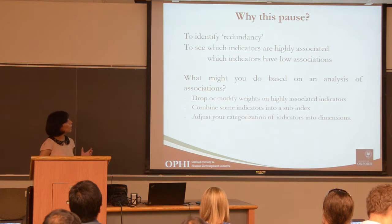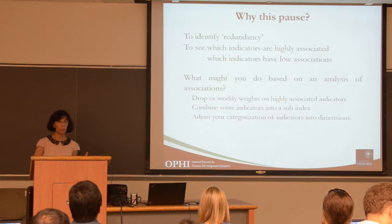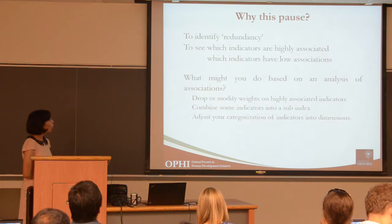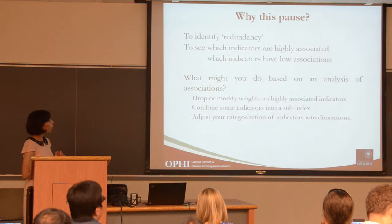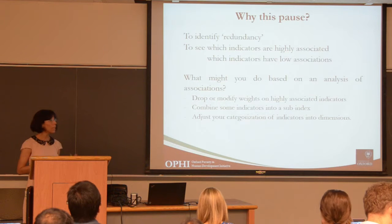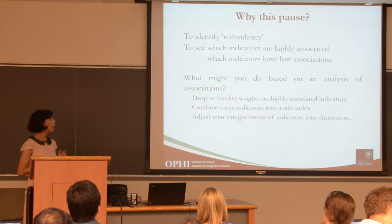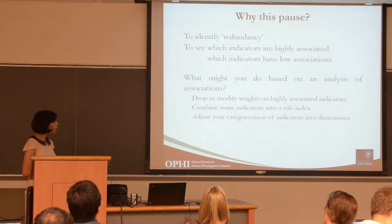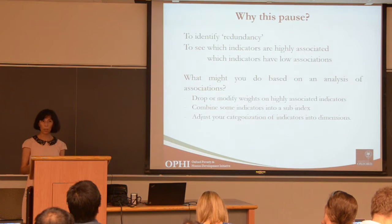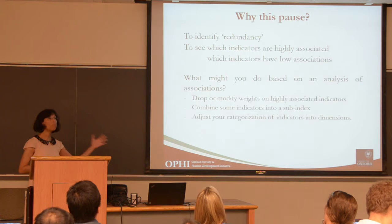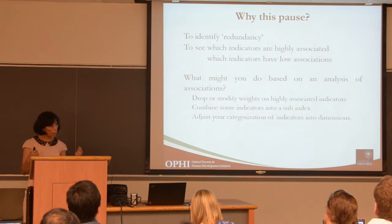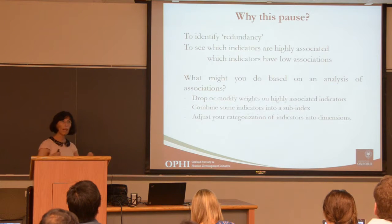Redundancy analysis tells us essentially two things: maybe the indicators are highly associated, or maybe they are not. Based on that, we can either drop or modify the weights if they are highly associated, combine some indicators into a new sub-index, or alternatively categorize them into different dimensions. This analysis of association and redundancy is clearly important when designing a measure.